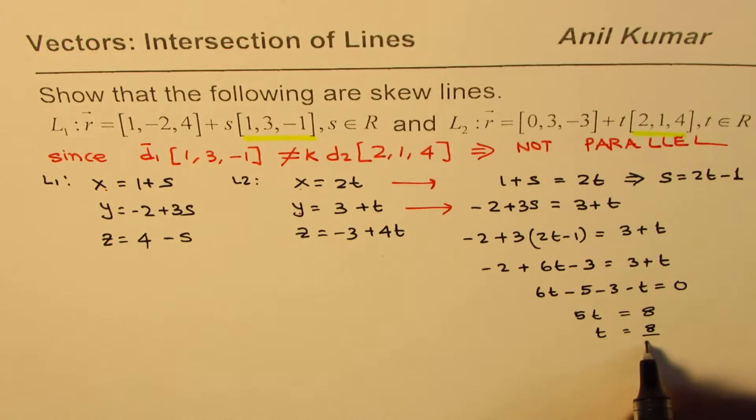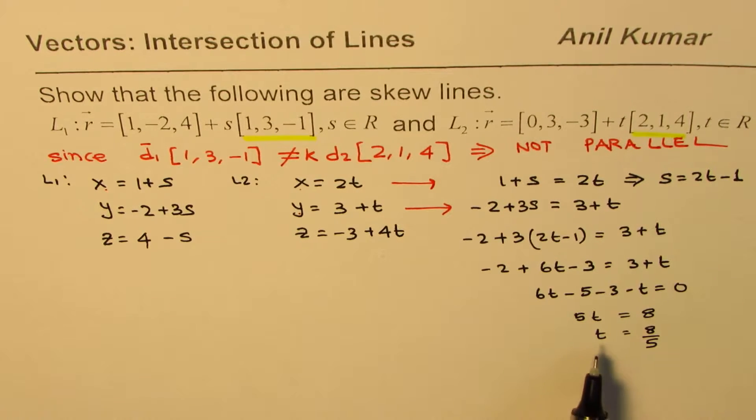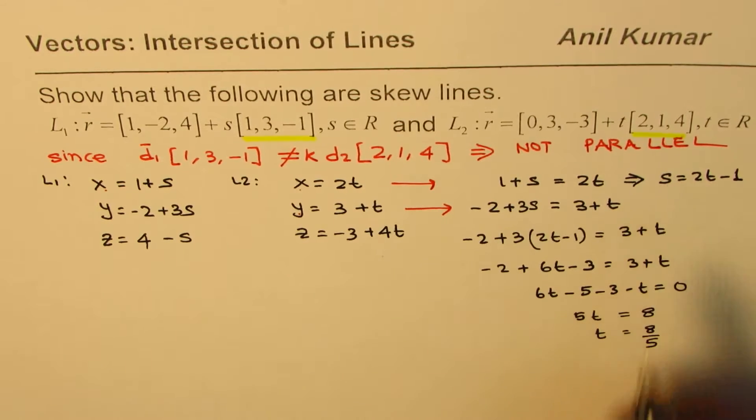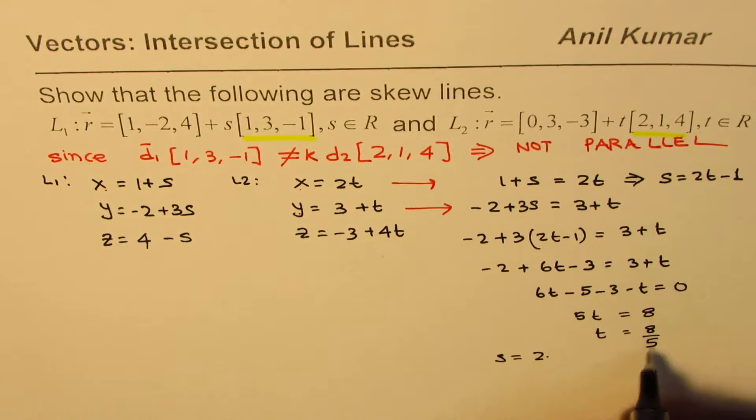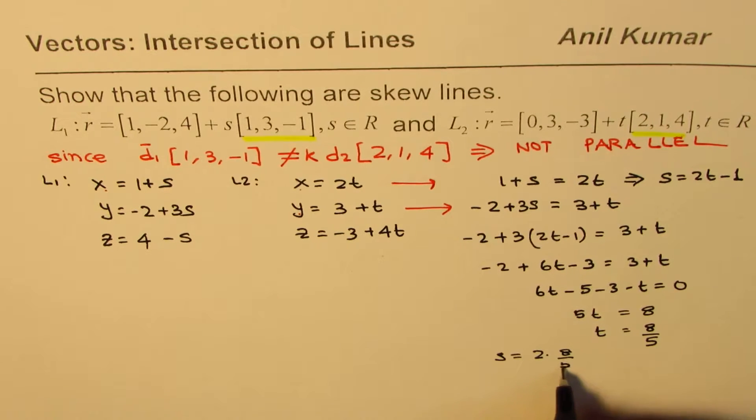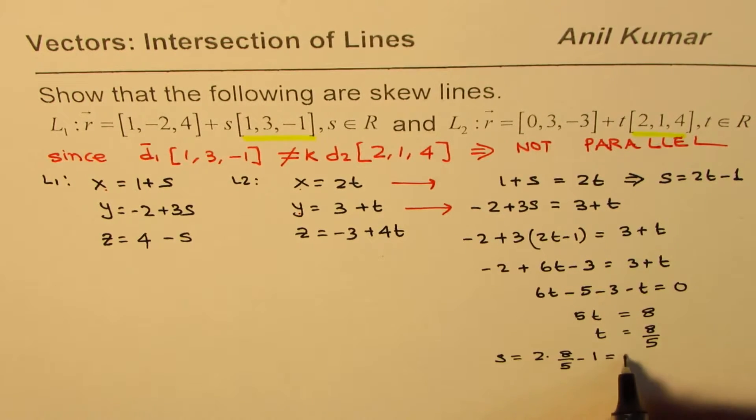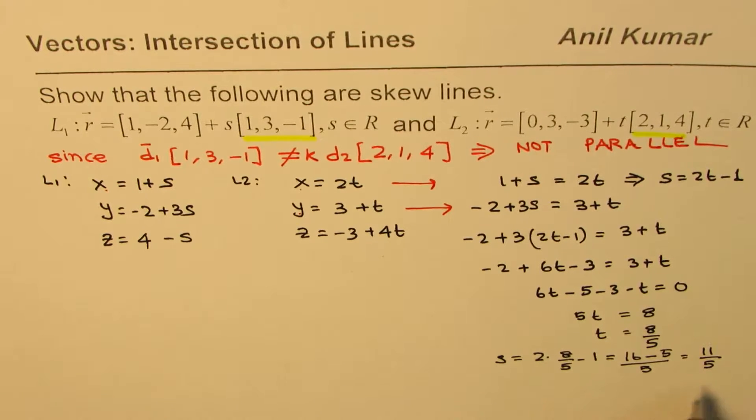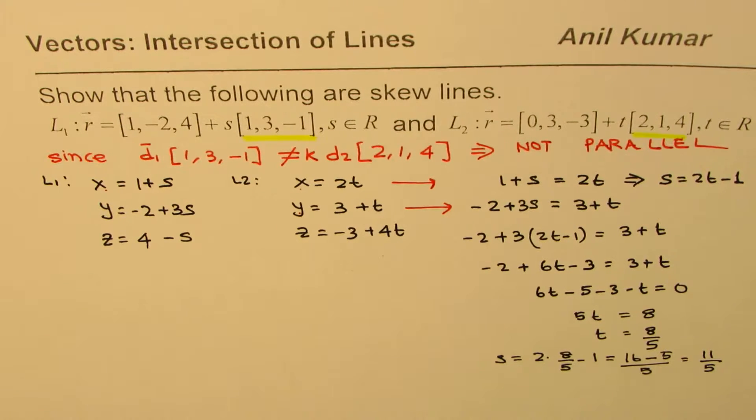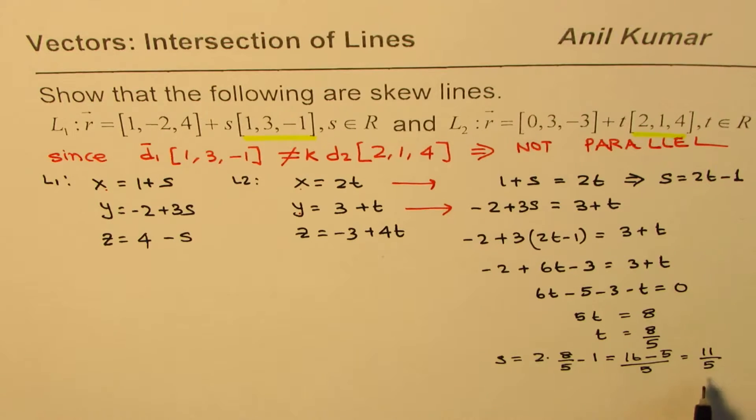Once we get the value of t we can find what s is. So s equals 2 times 8 over 5 take away 1. This is 16 take away 5 over 5 or 11 over 5.